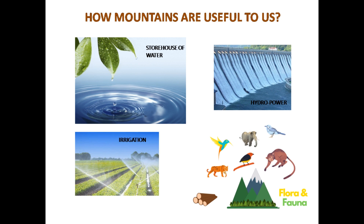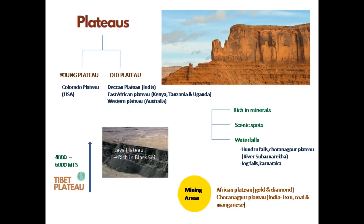The second landform type is plateaus. The elevated flat land is called a plateau. They have a huge rock-like structure and their height varies from a few hundred meters to a few thousand meters. We have young plateaus and old plateaus. The Deccan Plateau in India is one of the oldest plateaus in the world. Likewise, there are the East African Plateau and Western Plateau. Tibet Plateau is the world's tallest plateau, with height varying from 4,000 to 6,000 meters.